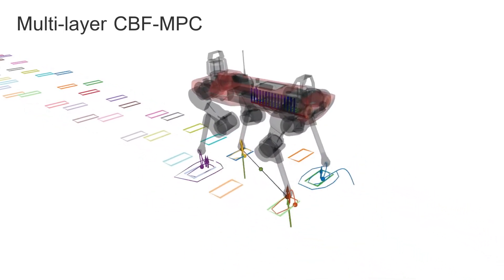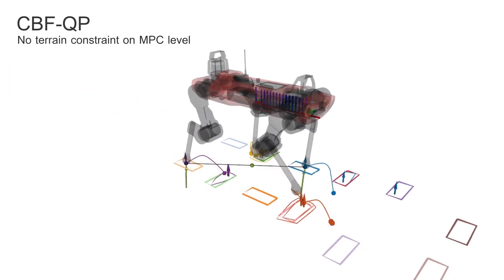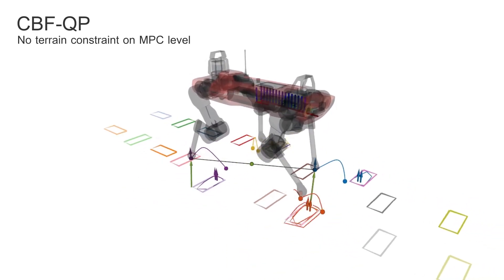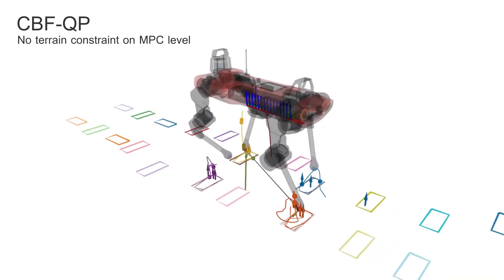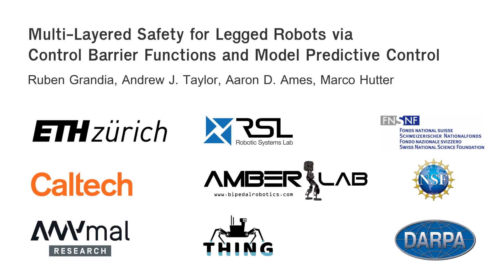And finally, we compare against the CBFQP approach, where the safety constraints are only considered in the reactive control layer. Here, we see that the balance is quickly lost when the scenario becomes more complex.